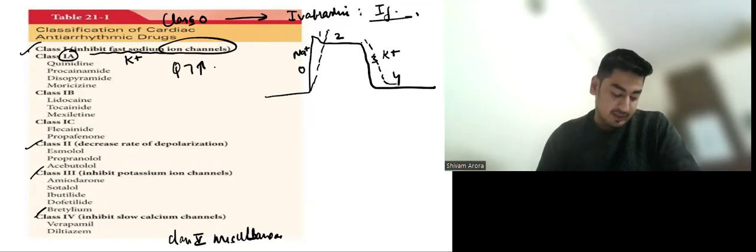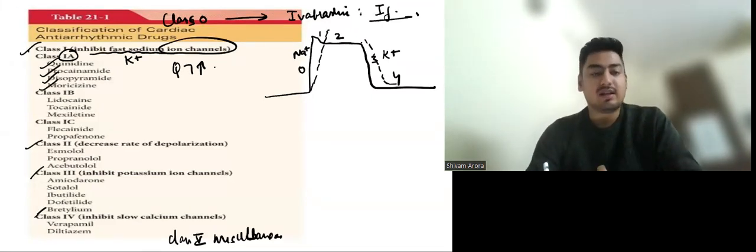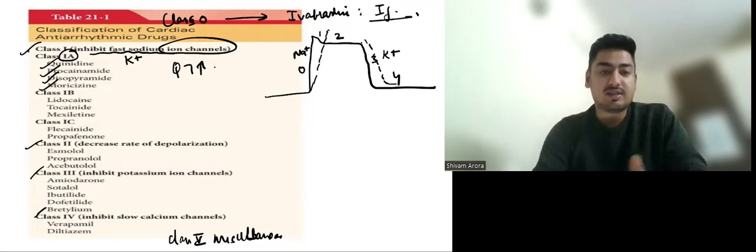The drugs are Quinidine, Procainamide, Disopyramide and Moricizine. You have to remember them. And question can definitely come which of the following is a class 1A agent or a class 1B agent.